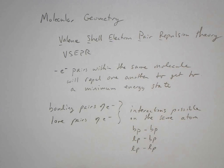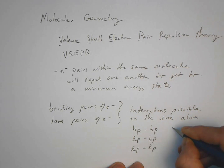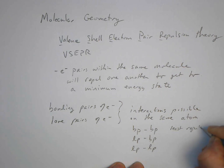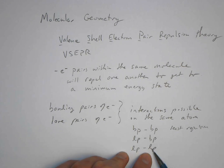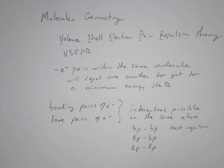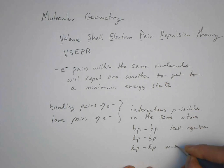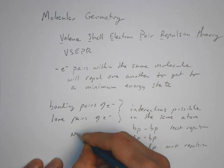The amount of repulsion varies by interaction type. A bonding pair–bonding pair interaction gives the least repulsion, because bonding electrons are mostly located between the internuclear axes and aren't spread out. Lone pair electrons are more spread out, so lone pair–lone pair interactions give the most repulsion. Let's draw the ammonia molecule to illustrate.